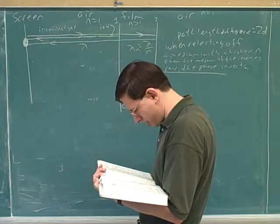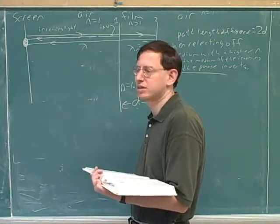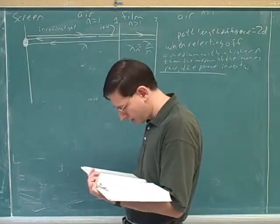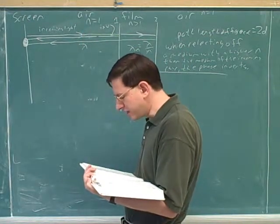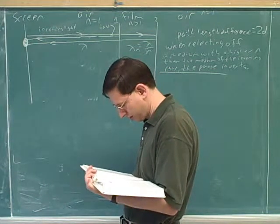So what is the medium that the light is originally in? The medium that the light is originally in here. Well, I think it makes sense that originally the light is in the air. Right, so n would be 1. Now, what's the next medium that the light encounters after it leaves the air? A lens.